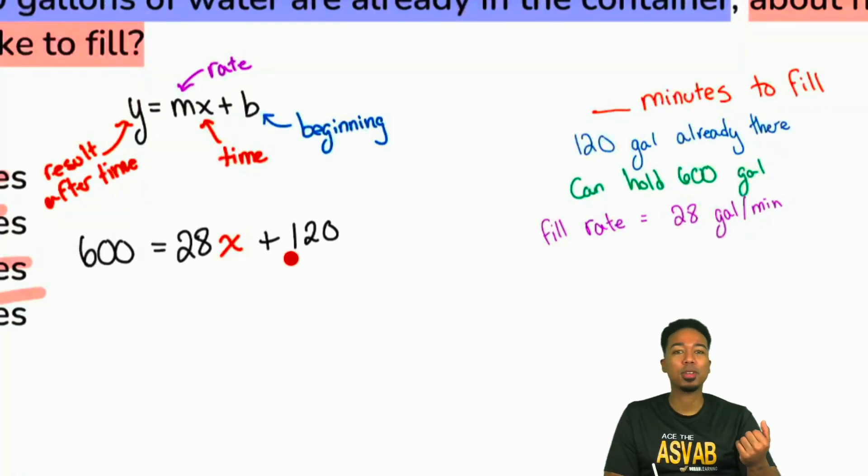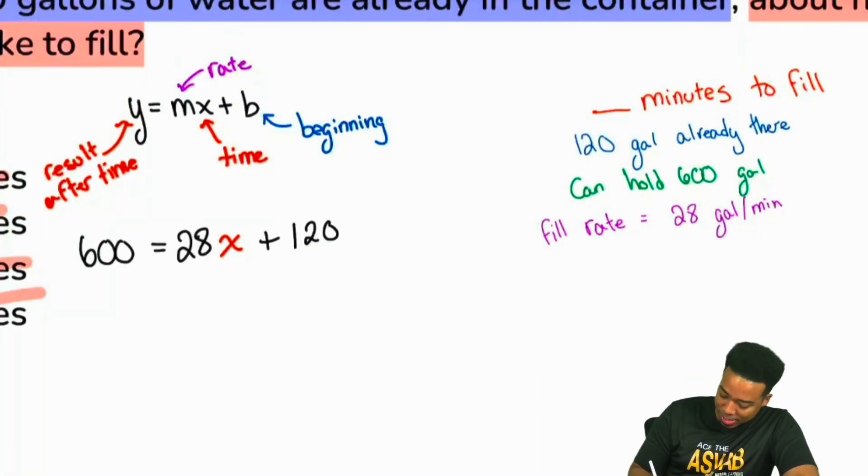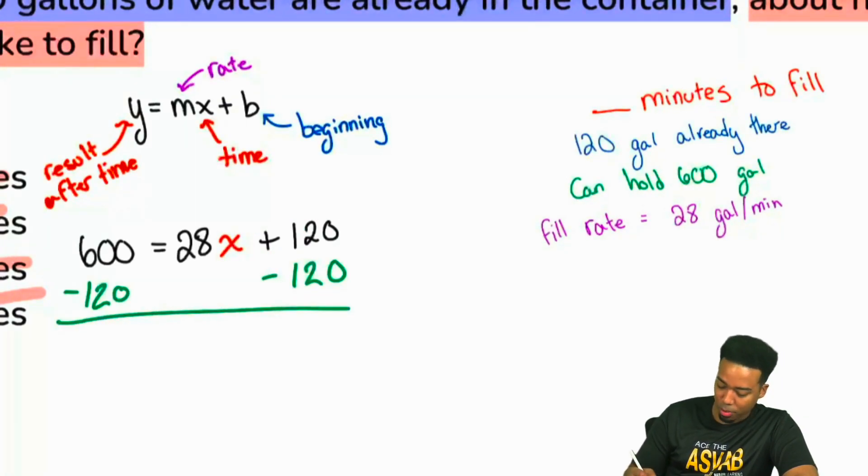Yeah, the 120 is going to be what we take care of first. The 28X, you see that those are attached, those are attached at the hip. We can get rid of that 120 first. So we'll go ahead and do that by saying the opposite of adding 120 - that would be subtracting 120 on both sides.